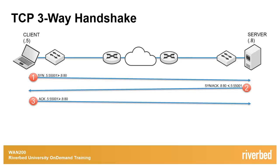Should this server-sourced SYN-ACK make its way back to the original client successfully, the client, as seen in step three, initiates and sends the third and final leg of the TCP three-way handshake, the closing ACK. Notice that the closing ACK contains the same TCP and IP addressing scheme as was used in the initial SYN.